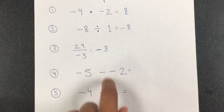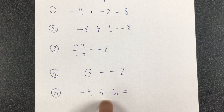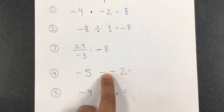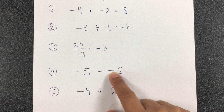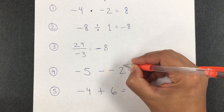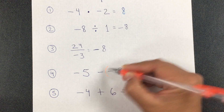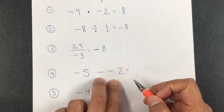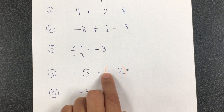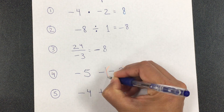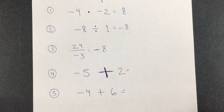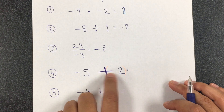Now with the next two we have subtraction and addition. Whenever we have two negative signs together — sometimes books write them with nothing in the middle, other times with a parenthesis enclosing the second negative — either way it means multiplication of the two signs. Negative times negative becomes positive. I call it a 'big plus': two negatives together equal a big plus.